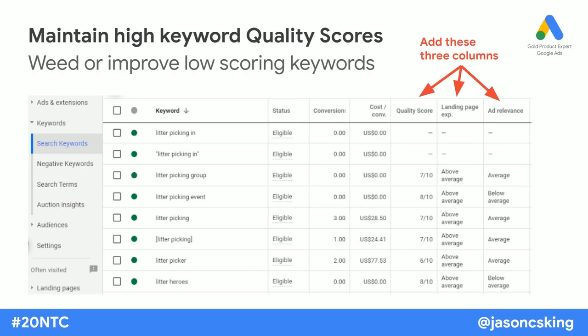You need to maintain high keyword quality scores, and I find this even more important in an ad grants account than in a paid account. Your ad grant account is going to appear below paying ads every time, and there's often a lot of competition for keywords that charities are bidding on. You want your ads to rise to the top, and to do that you need to improve your quality scores.